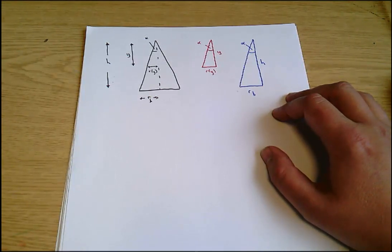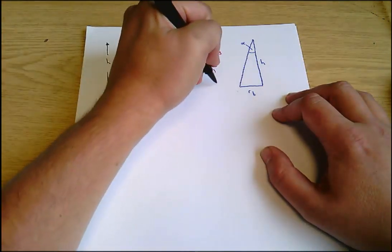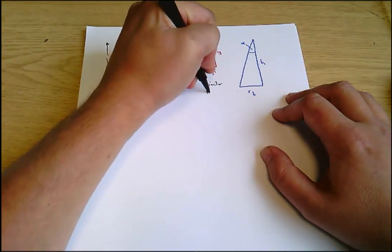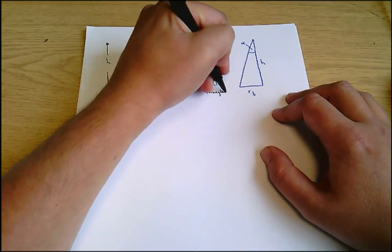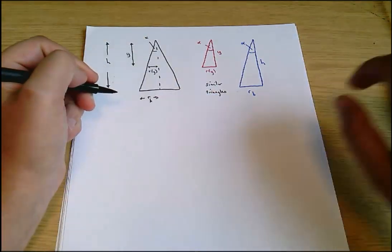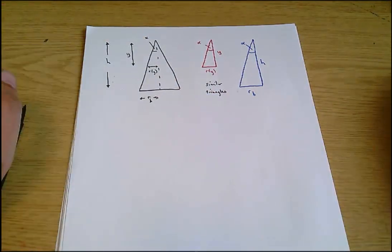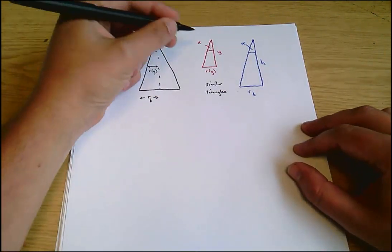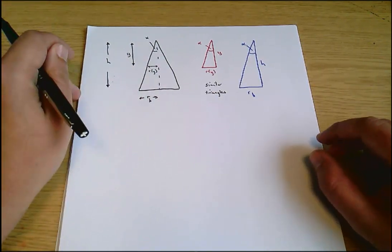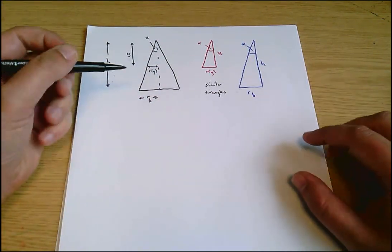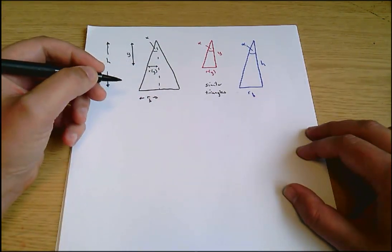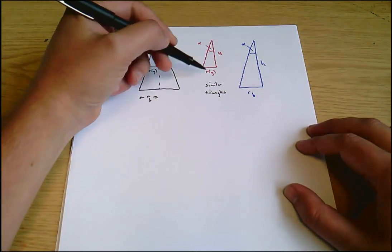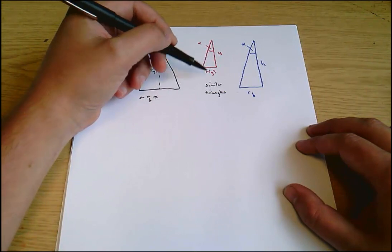And that turns out to be very important because that means these are similar triangles. Does it mean they're similar triangles? Let me just... Yeah I shouldn't have doubted my terminology. They are similar triangles which means they've got the same shape but they're different sizes. And in particular what it means is the ratio of any pair of sides is the same in both triangles.